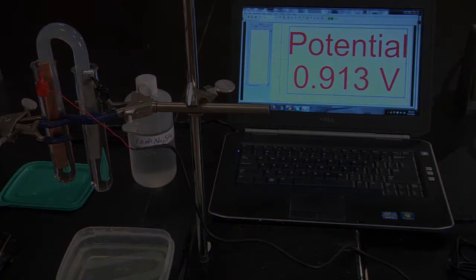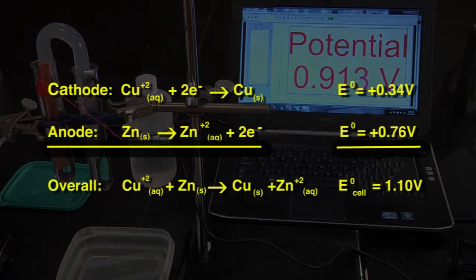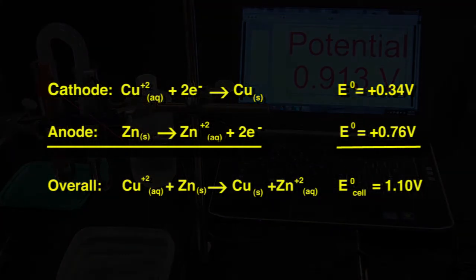Theoretically, a cell made of copper and zinc in a one molar solution should produce 1.1 volt.